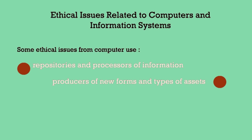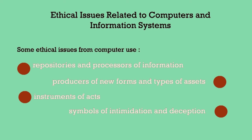Ethical issues related to computers and information systems involve four roles: first, repositories and processors of information; second, producers of new forms and types of assets; third, instruments of acts; and fourth, symbols of intimidation and deception.